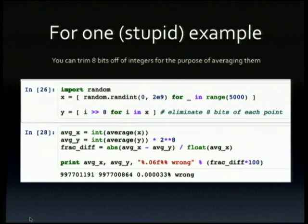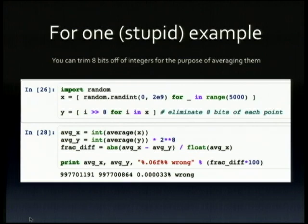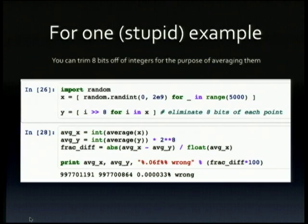Here's a stupid example. Suppose you have a bunch of integers — 5,000 selected in the range 0 to 2 billion. If you want to compute the average, you don't need the lowest eight bits of those numbers to get a pretty accurate result. So if you just take all the numbers, trim off the lowest eight bits, take the average, then re-multiply by 256, the actual fractional difference — the percent that's wrong — is very, very small. You've gotten rid of a quarter of the data and you're getting an answer that's essentially almost exactly correct. This is a straightforward example of the idea that there's often data that doesn't really matter for the computation you're trying to perform — you want to figure out which parts don't matter, which parts do, and keep the parts that do.